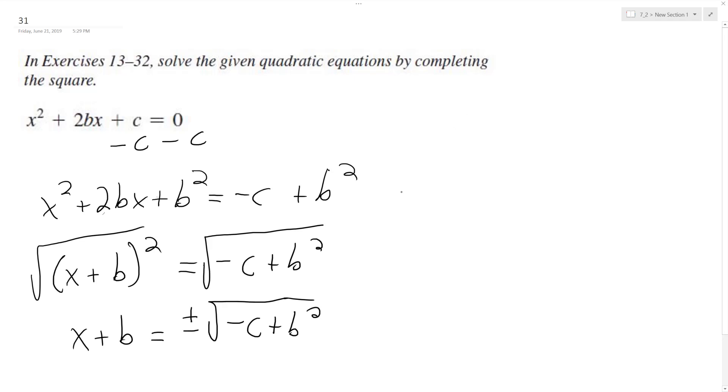Subtract b from both sides. And we're left with plus or minus the square root of negative c plus b squared minus b. And that's it.